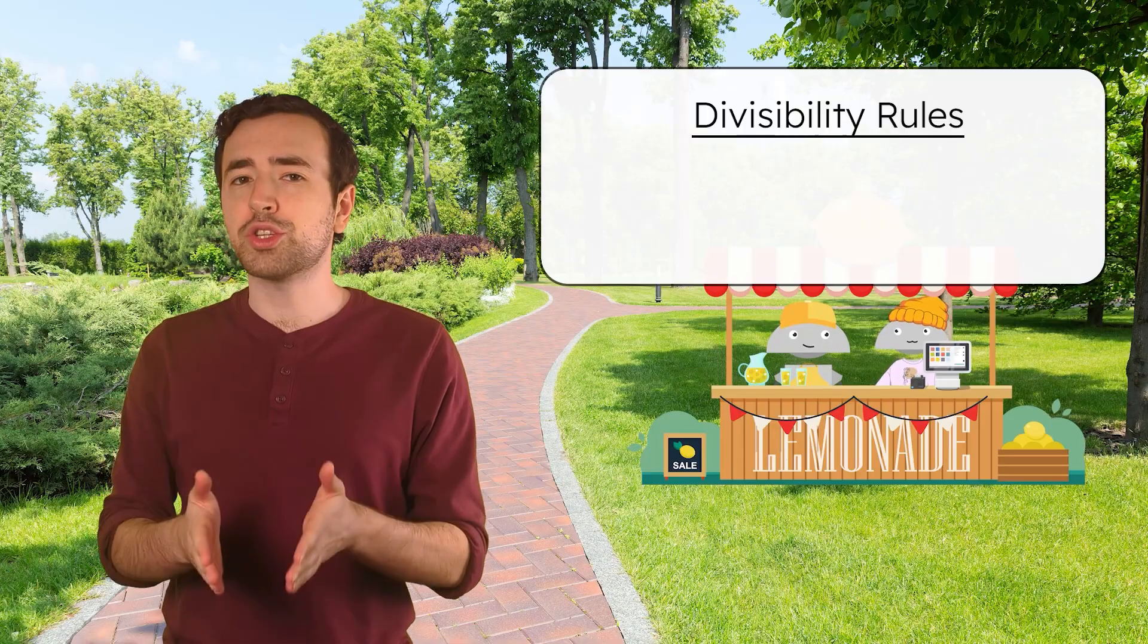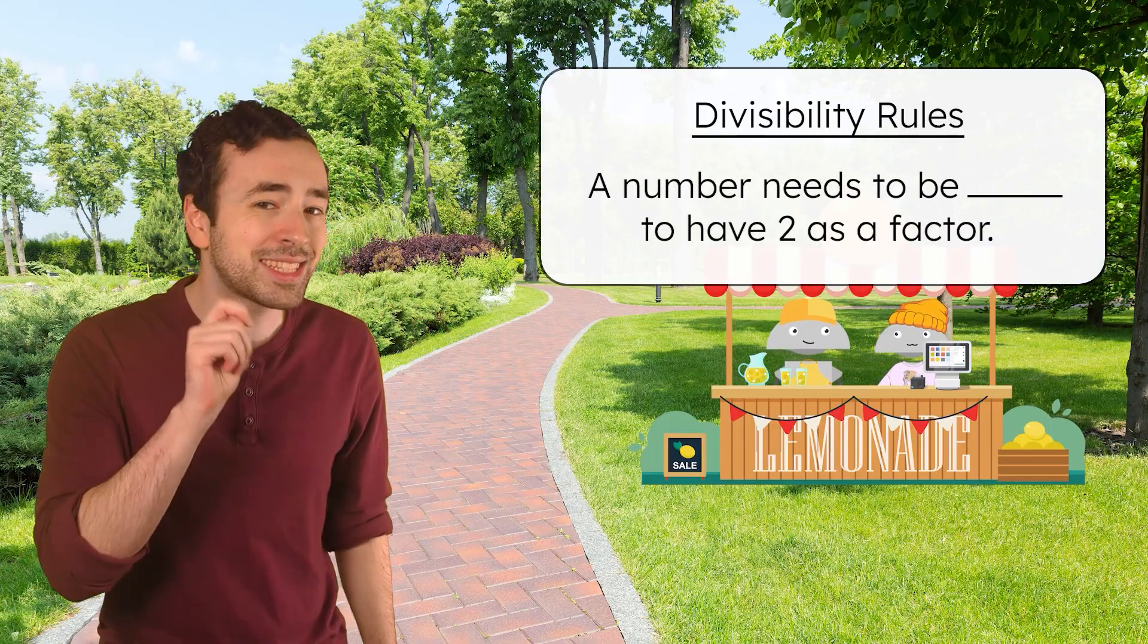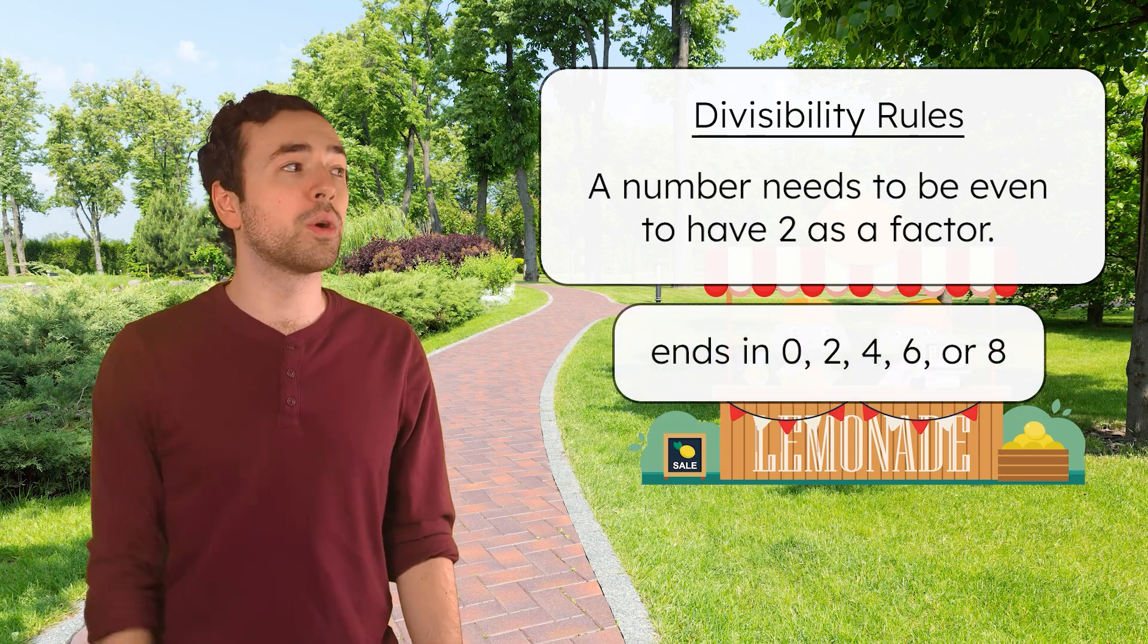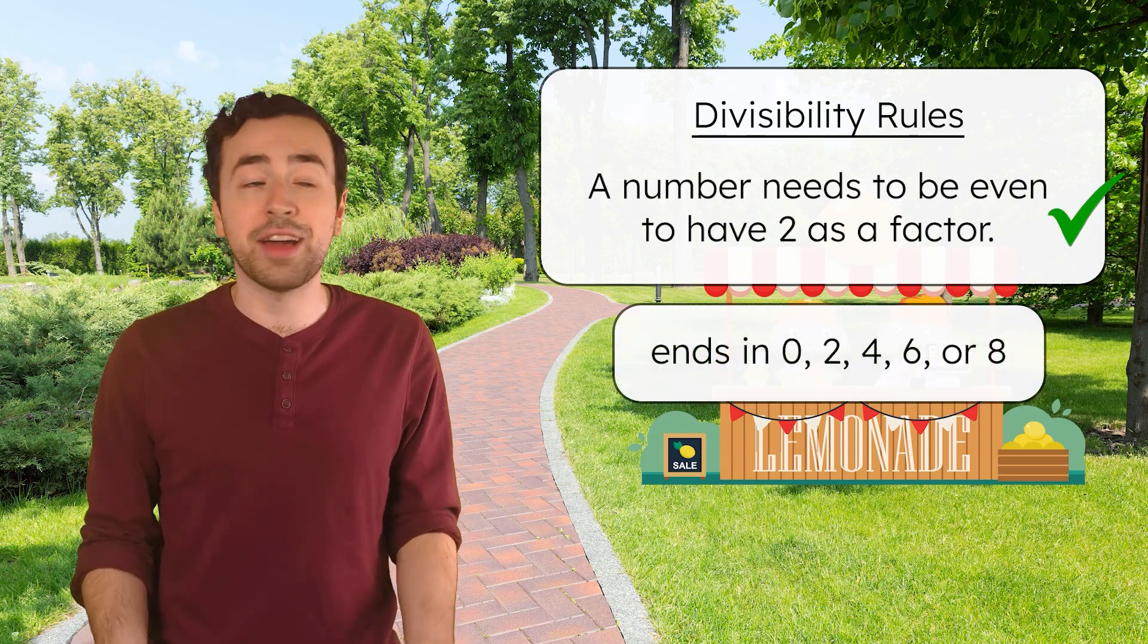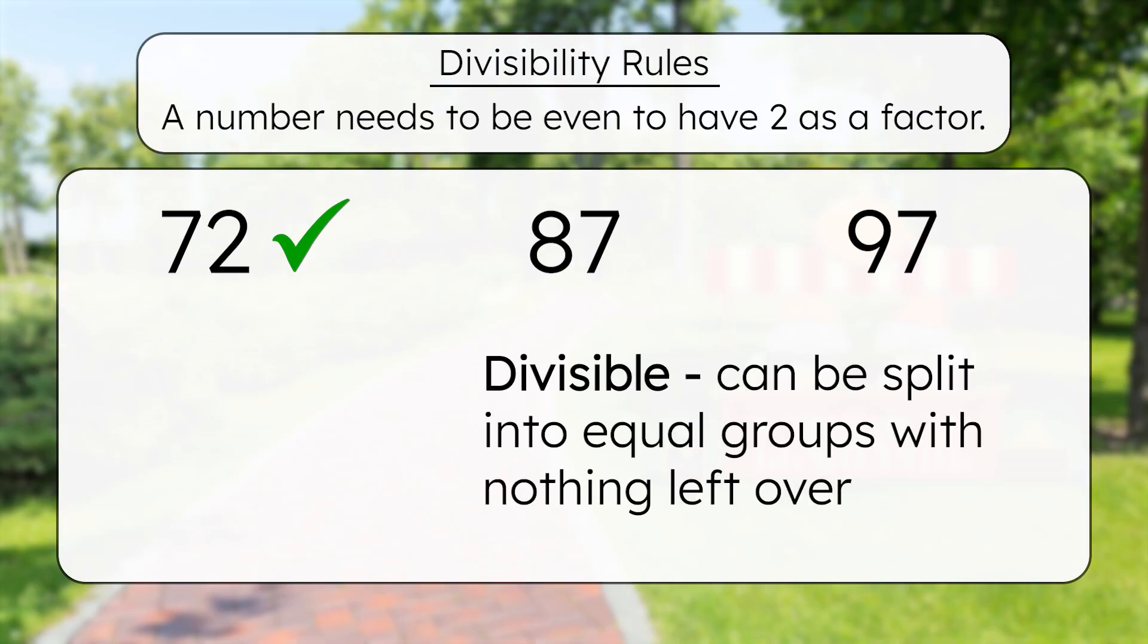What needs to be true for a number to have 2 as a factor? The number needs to be even. If a number ends in 0, 2, 4, 6, or 8, it'll have 2 as a factor. So is 2 a factor of 72? Yeah, it's even. That means 72 is divisible by 2, because it can be split into 2 equal groups without any leftovers.